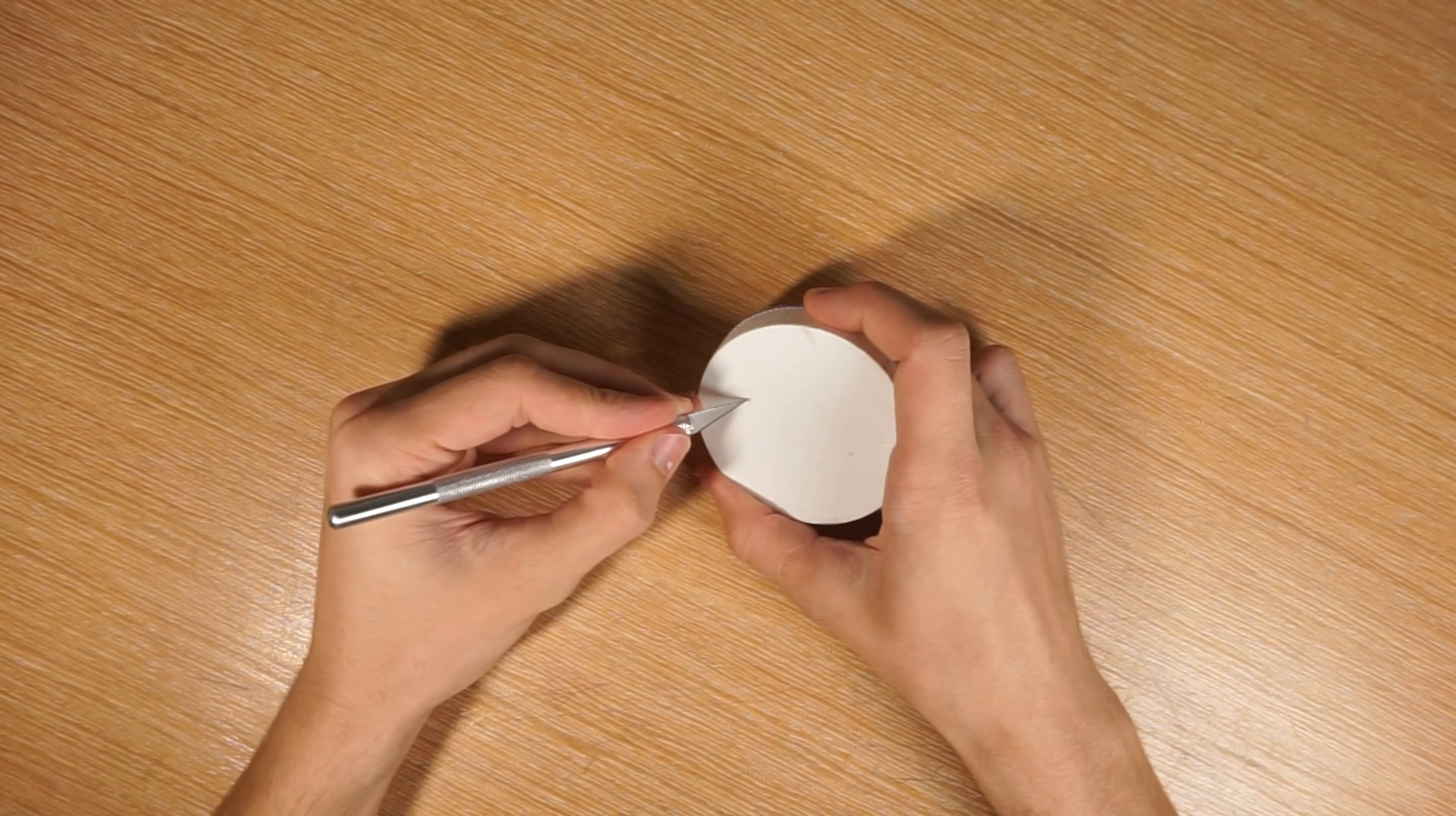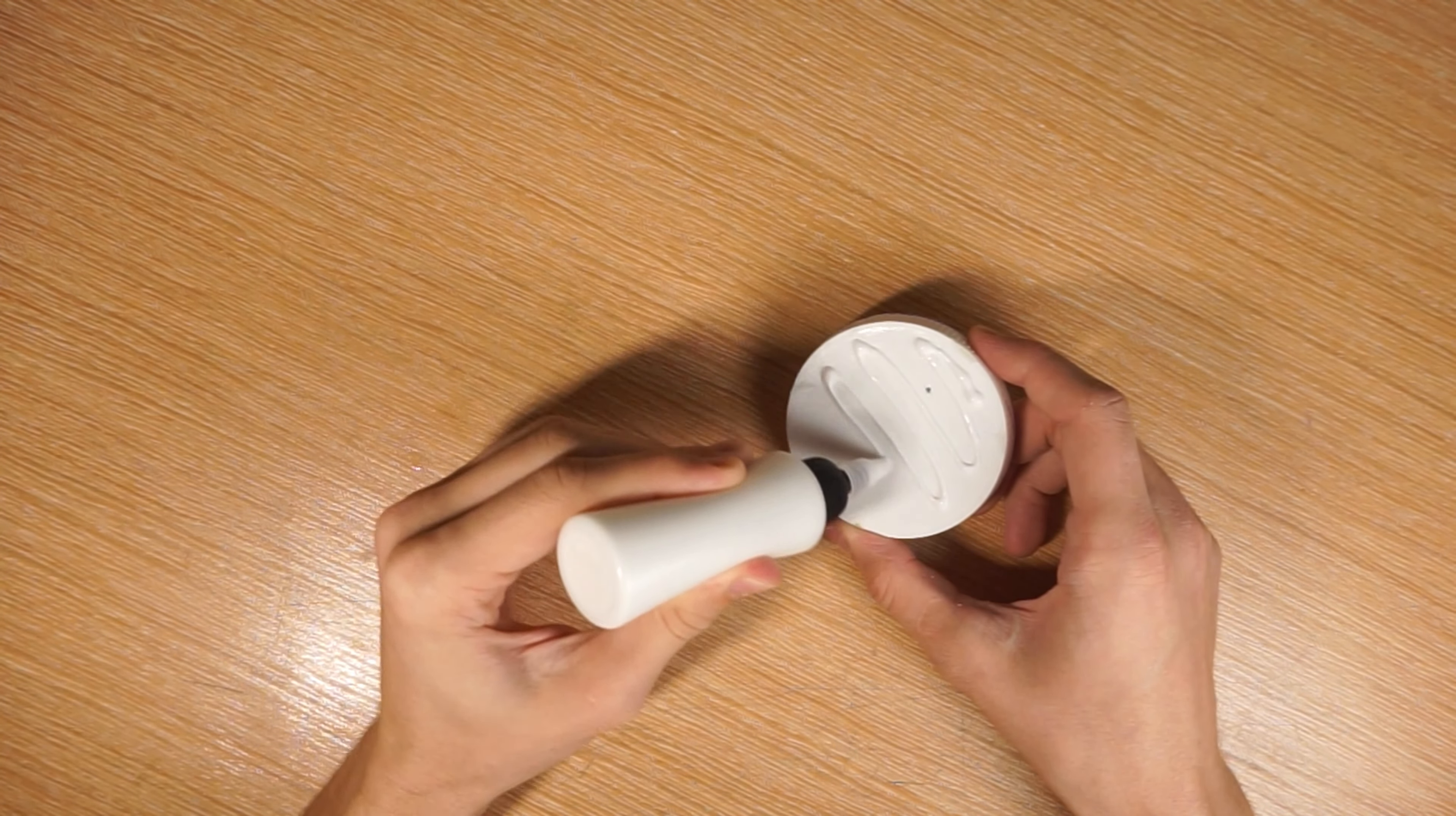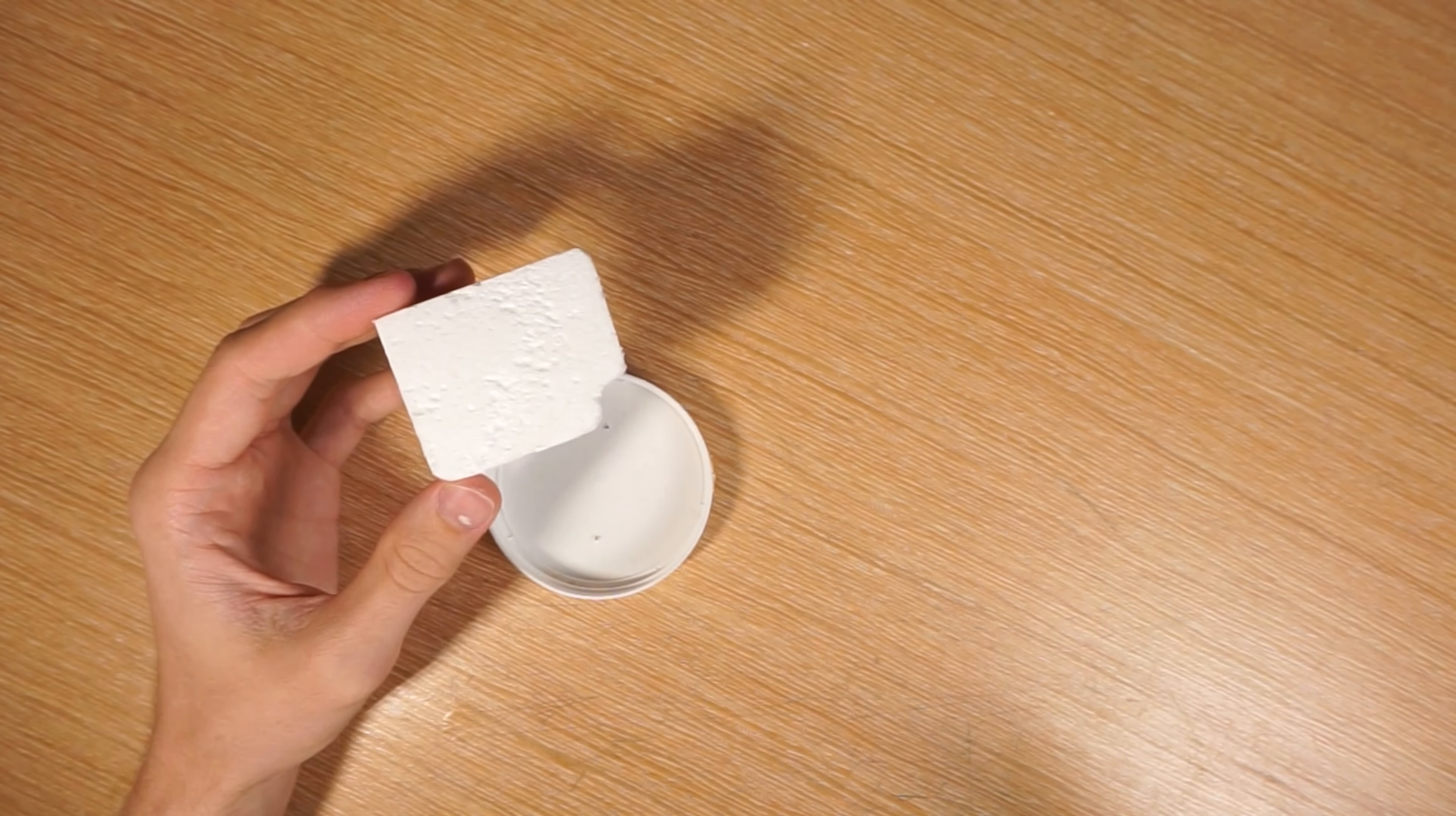These holes will be for the legs. I'm gluing on a piece of cloth to make the base look like carpet. The styrofoam block will hold the legs in place.